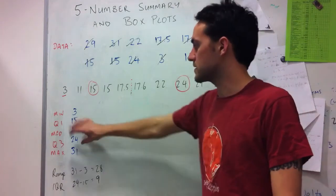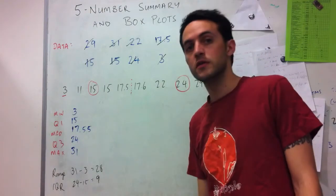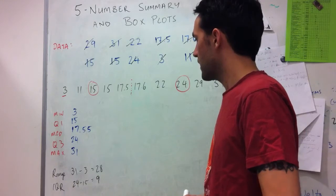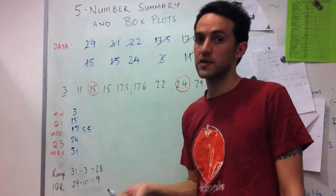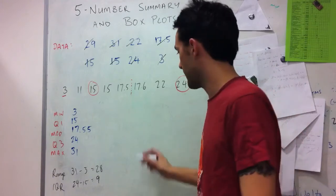But then what I want to be able to do is turn this into a visual summary. And so for that, I do a box plot. So for a box plot, I can either have them vertical or horizontal. But if I have them horizontal, what I first need is an axis.